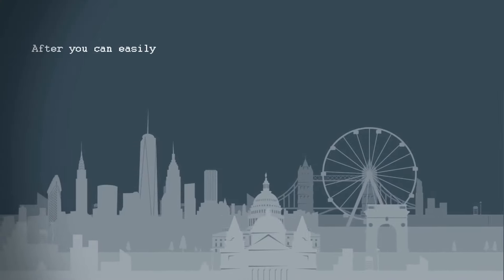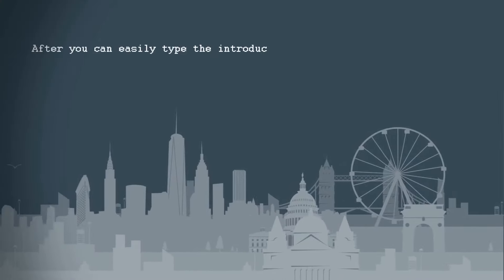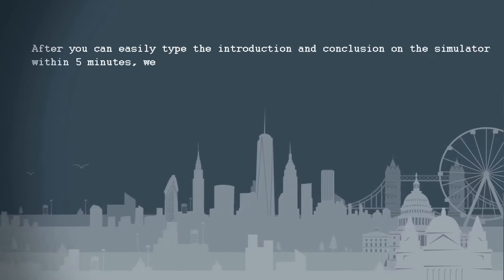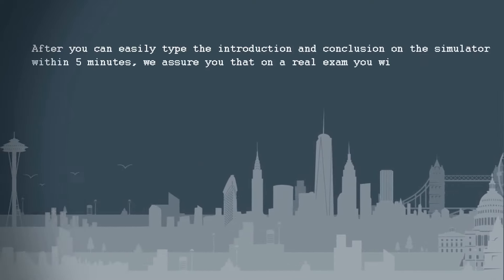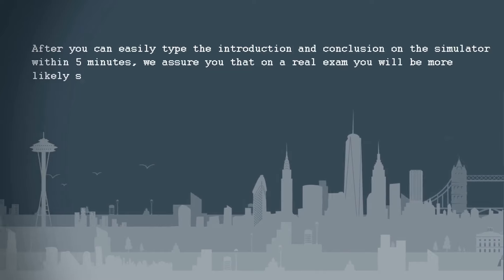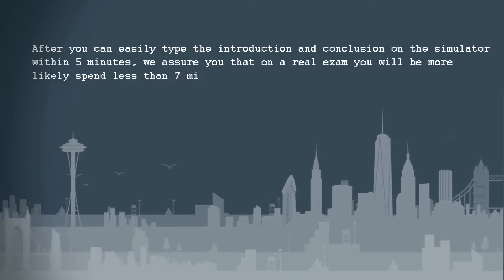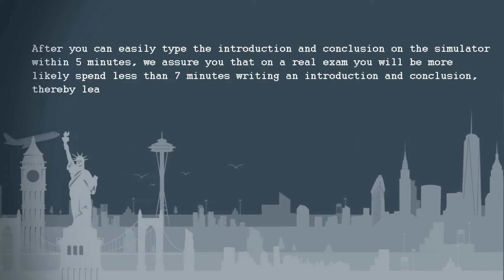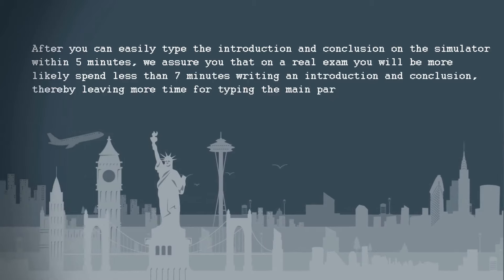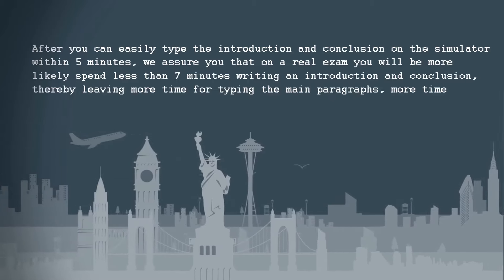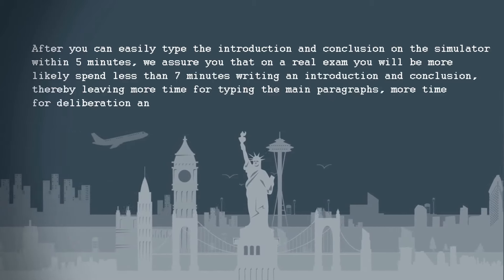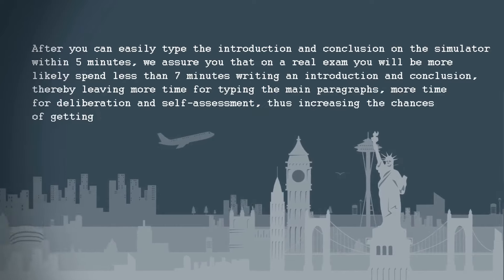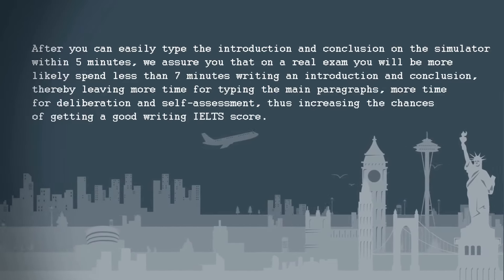After you can easily type the introduction and conclusion on the simulator within 5 minutes, on a real exam you will spend less than 7 minutes writing an introduction and conclusion, thereby leaving more time for typing the main paragraphs, more time for deliberation and self-assessment, thereby increasing the chance of getting an excellent writing IELTS score.